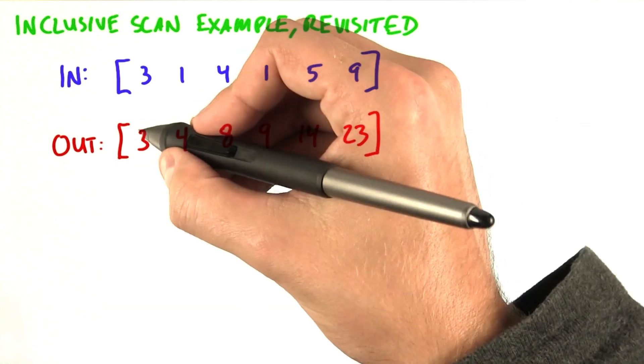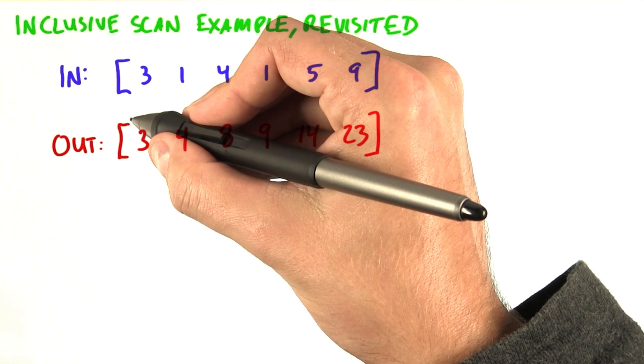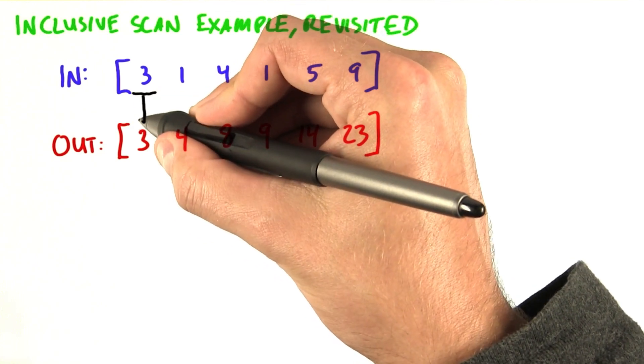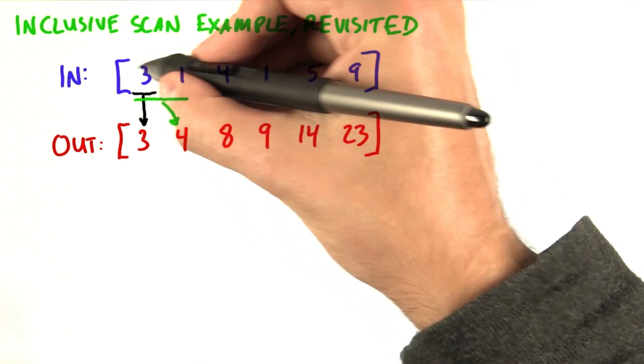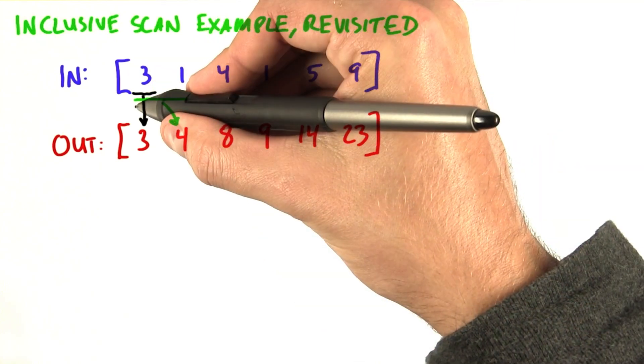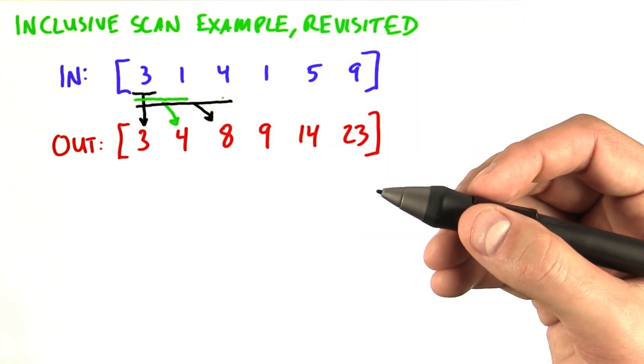Let's think about it this way. What is this output element as a function of all these input elements? Well, really what it is is just a reduction of the first element. The second output element is simply a reduction of the first two input elements. The third output element is a reduction of the first three inputs and so on.